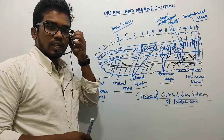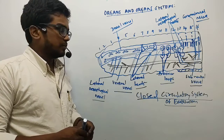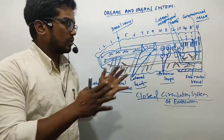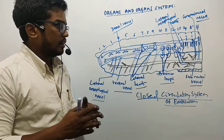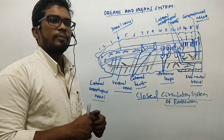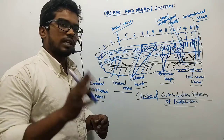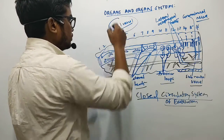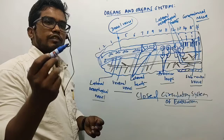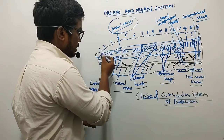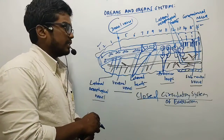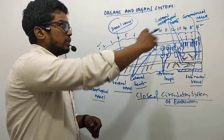Now let us discuss the structure. The arrangement of blood vessels is dissimilar — not in a uniform manner. From the first to the 13th segments, blood vessels are arranged in a specific pattern. The dorsal blood vessel extends from the first segment all the way to the last segment.